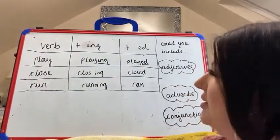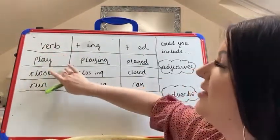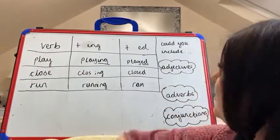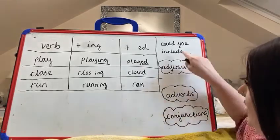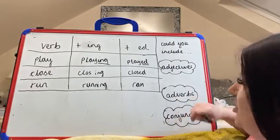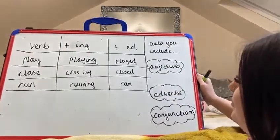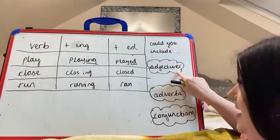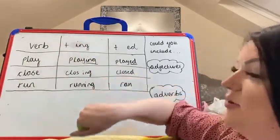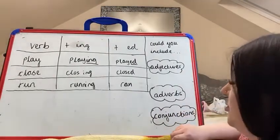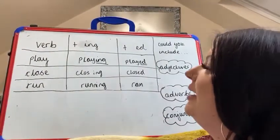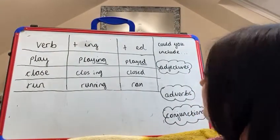I could make a sentence with any of these — it doesn't just have to be the verb itself. It could be a verb with a suffix, and that would be really interesting. The other things I want to consider in my sentences: can I include an adjective or more than one adjective? Can I use adverbs, and can I use conjunctions? Adjectives are my describing words — they describe my nouns. Adverbs describe how I'm doing these things. Conjunctions are for joining sentences. I could just write something simple like 'I like to play with my ball,' but we can make that more interesting.